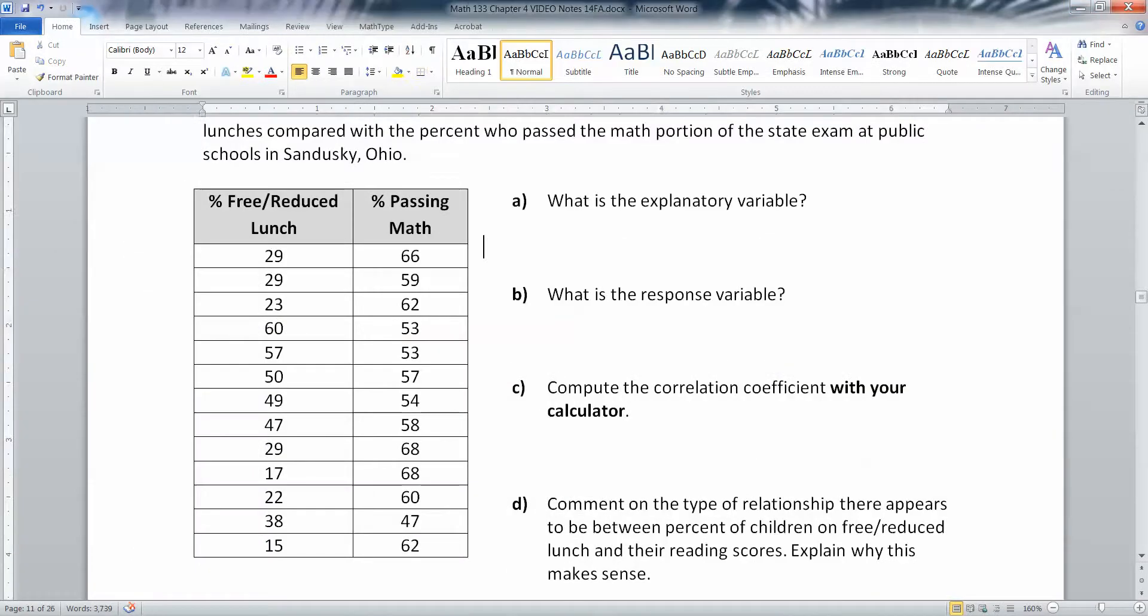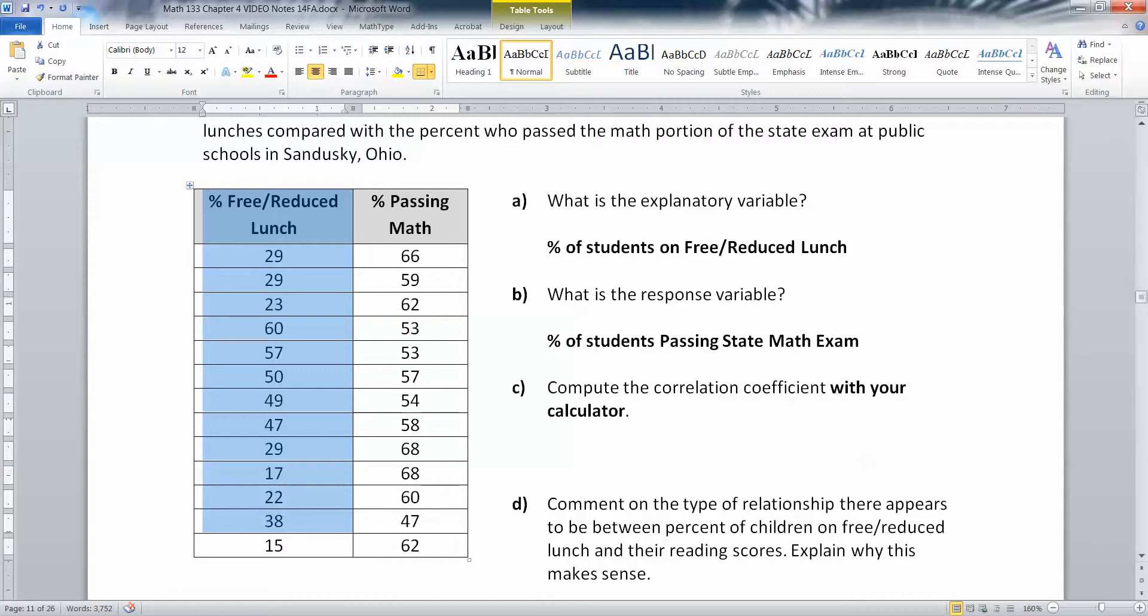They want us to answer what is the explanatory and what's the response variable. The explanatory variable is the percentage of students that are on free reduced lunch - that's your X. The response variable is the percentage of students that pass the state math exam.